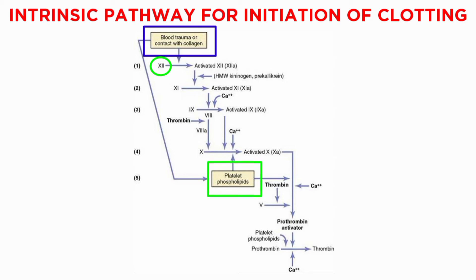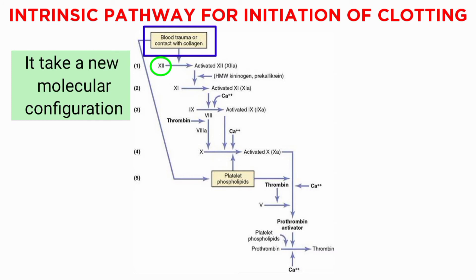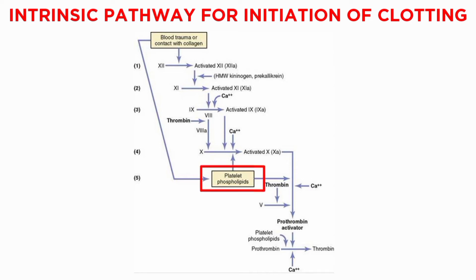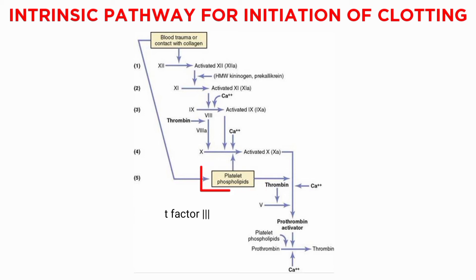Trauma to the blood or exposure to vascular wall collagen alters two important clotting factors: factor 12 and platelets. When factor 12 is disturbed by coming into contact with collagen, it takes on a new molecular configuration that converts it into a proteolytic enzyme called activated factor 12. Simultaneously, blood trauma also damages the platelets due to adherence to collagen or a wettable surface, releasing platelet phospholipids that contain the lipoprotein called platelet factor 3, which also plays a role in clotting reactions.